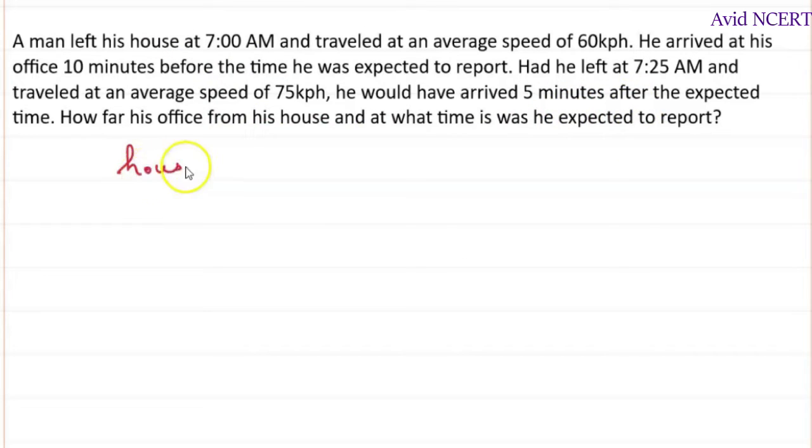So he has started from his house and travelled some distance D and reached his office. In the first scenario, he is starting from house by 7 a.m. and travelled at a speed which is 60 km per hour and arrived at his office 10 minutes before the expected time. So which is minus 10 is before.